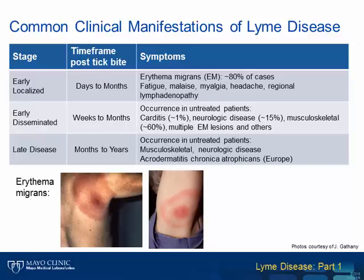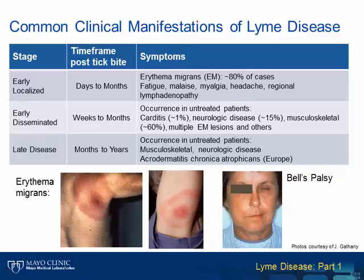Progression to the second stage, or the early disseminated stage, occurs primarily in untreated individuals anywhere from weeks to months following the initial tick bite. Complications during this phase include development of neurologic disease, which classically presents with the triad of meningitis, cranial neuropathy, and motor or sensory radiculoneuropathy. The facial nerve is most commonly affected, often leading to Bell's palsy. Musculoskeletal manifestations, more specifically monoarticular or oligoarticular arthritis, may also develop and can be either intermittent or persistent, typically affecting the large joints. Multiple EM lesions may develop at this stage, as can more rarely carditis.